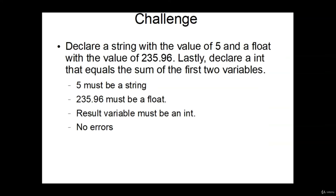For a challenge: declare a string with the value of five and a float with the value of 235.96. Then declare an integer that equals the sum of the first two variables. So five must be a string, 235.96 must be a float, the results variable must be an integer, and of course your program can have no errors. Go ahead and pause the video, give that a try, and I'll have the solution in the next video.